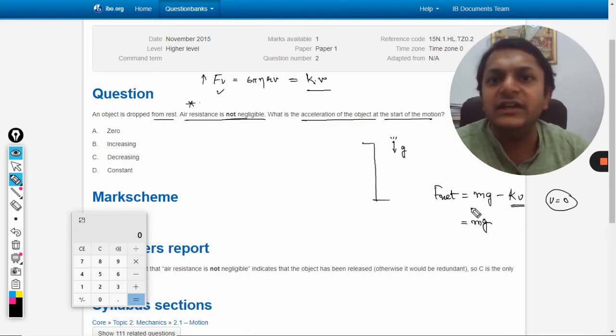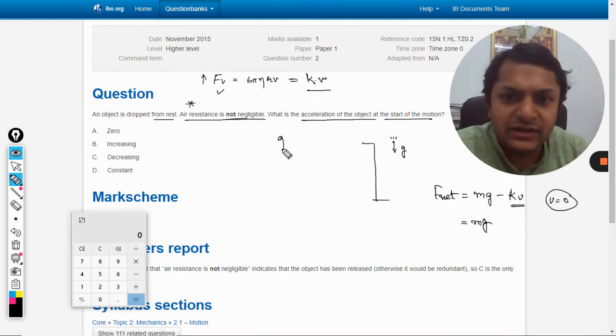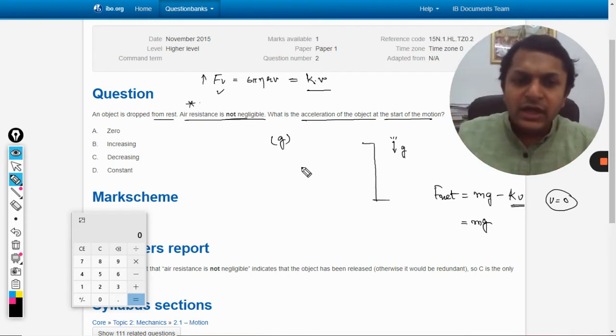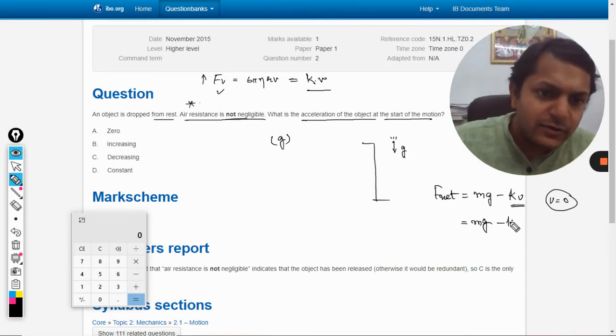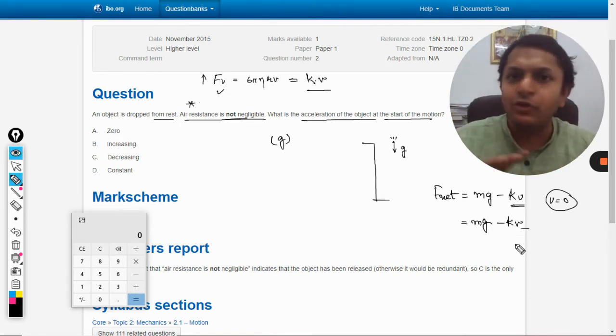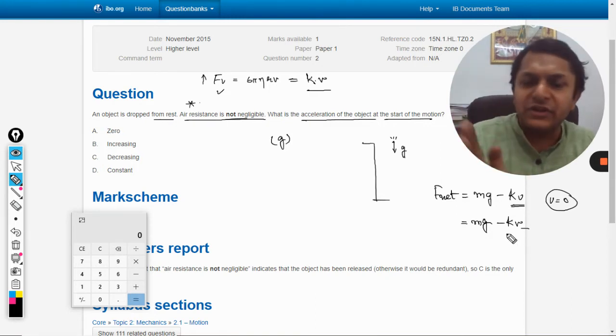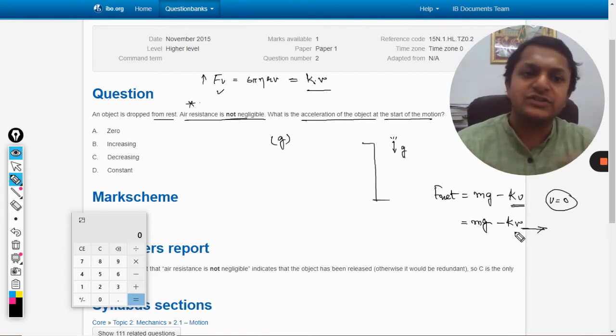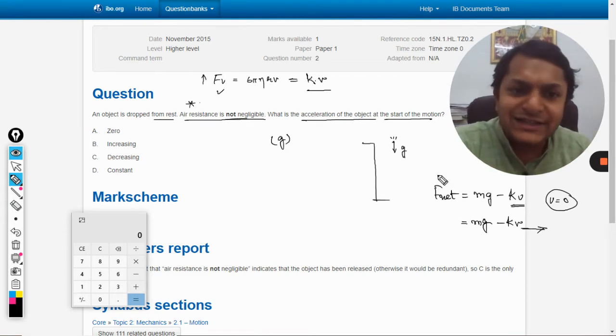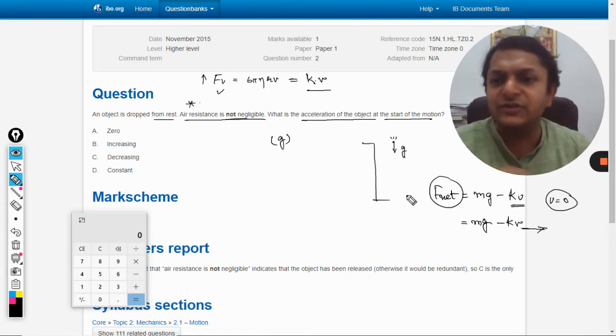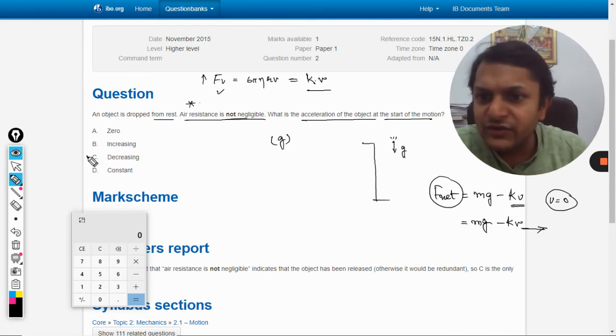That is why initially it will move with acceleration due to gravity. But in coming time it will start reducing because v is now not zero, so some part of it will start getting subtracted. As the Fnet is reduced, the acceleration will reduce, so acceleration will be decreasing. After some time, acceleration will definitely become zero.